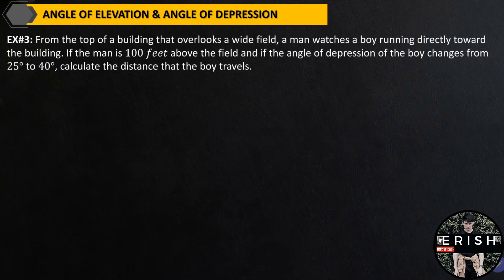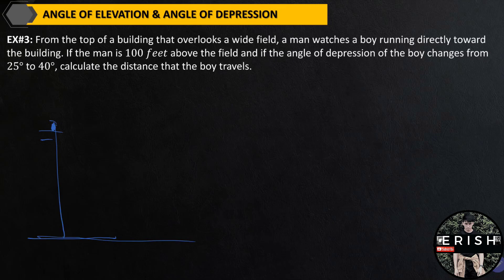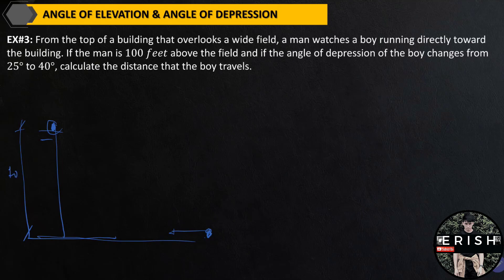Example number 3. From the top of a building that overlooks a wide field, a man watches a boy running directly toward the building. Let's draw it. This is the building, and the observer is at the top. The man watches a boy running directly toward the building. If the man is 100 feet above the field, and the angle of depression of the boy changes from 25 degrees to 40 degrees, we have two observations here.